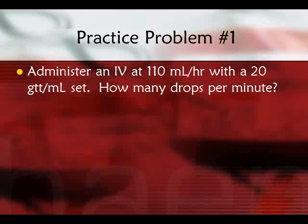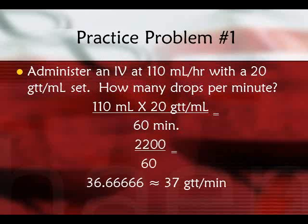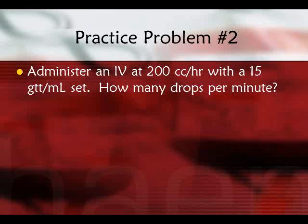Practice problem one: administer an IV at 110 mL per hour with a 20-drop per mL set — how many drops per minute? Set up as 110 mL times 20 drops per mL divided by 60 minutes. That gives 2200 over 60, which is approximately 36.67, or 37 drops per minute. Since we can't give a portion of a drop, we round up to the nearest whole number.